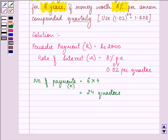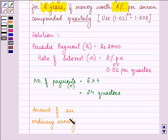We need to find out the amount of an ordinary annuity. The formula for that is R multiplied by (1 plus r) raised to the power N minus 1, upon r.